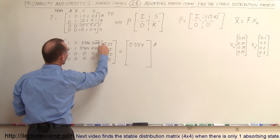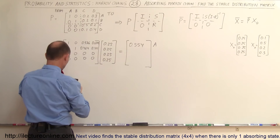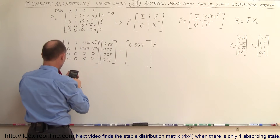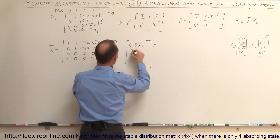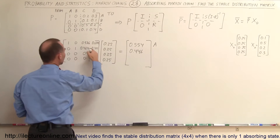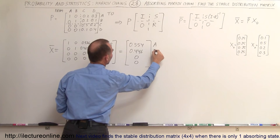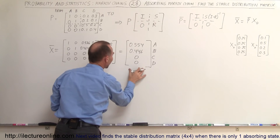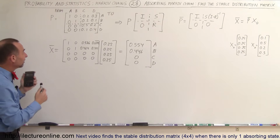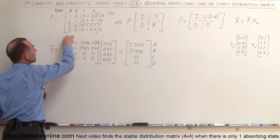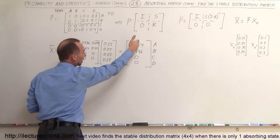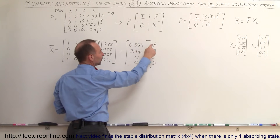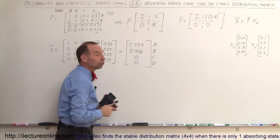State A will end up with 55.4% of the population with this initial condition. To get the second element for state B, we multiply that row by the column: 0.25 plus 0.464 times 0.25 plus 0.321 times 0.25 equals 0.446. States C and D end up with 0 population, so 55.4% goes to A and 44.6% goes to B.